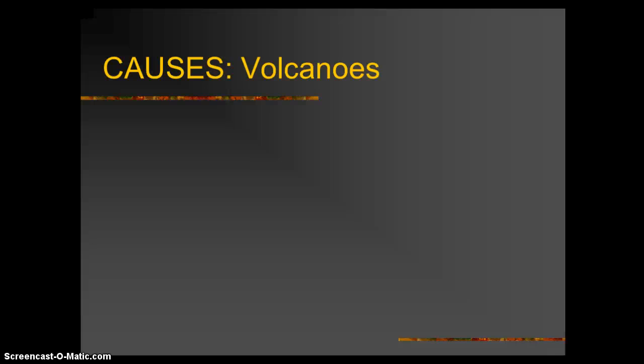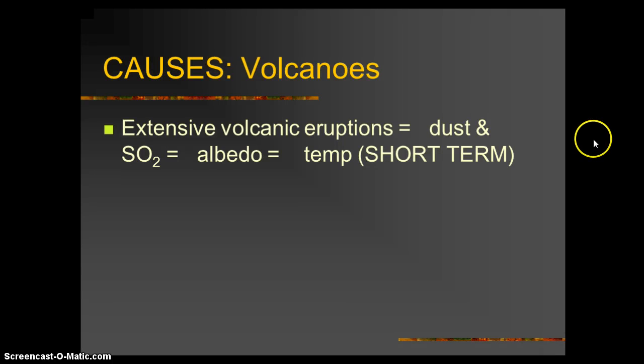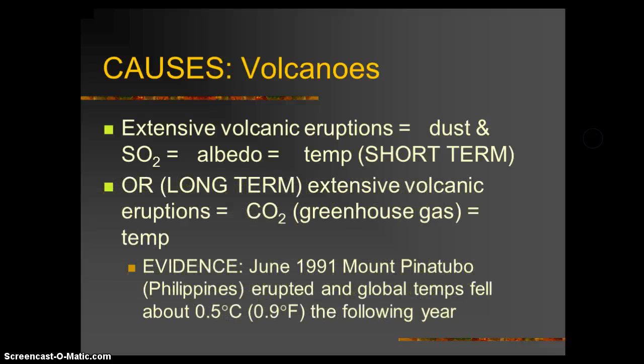Another natural cause for climate change would be volcanoes. Volcanoes are unique in their natural cause because they can cause both cooling and warming. They all seem to operate on both short-term and long-term scales.